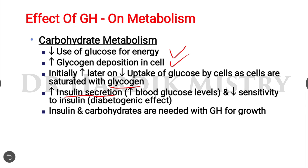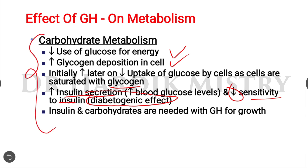Growth hormone also causes a decrease in sensitivity to insulin, so it has a diabetogenic effect. It is considered a diabetes-causing hormone because it causes hyperglycemia. Insulin, carbohydrates, and growth hormone — all three are needed for the growth and development of a normal person. That is the overall effect of growth hormone on carbohydrate metabolism.